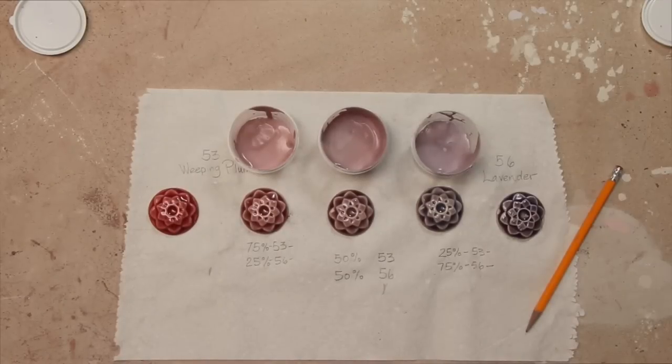Once the tiles are out of the kiln, you can see the beautiful lined blend of Weeping Plum and Lavender, a smooth gradient from warm dark pink to cool dark purple.